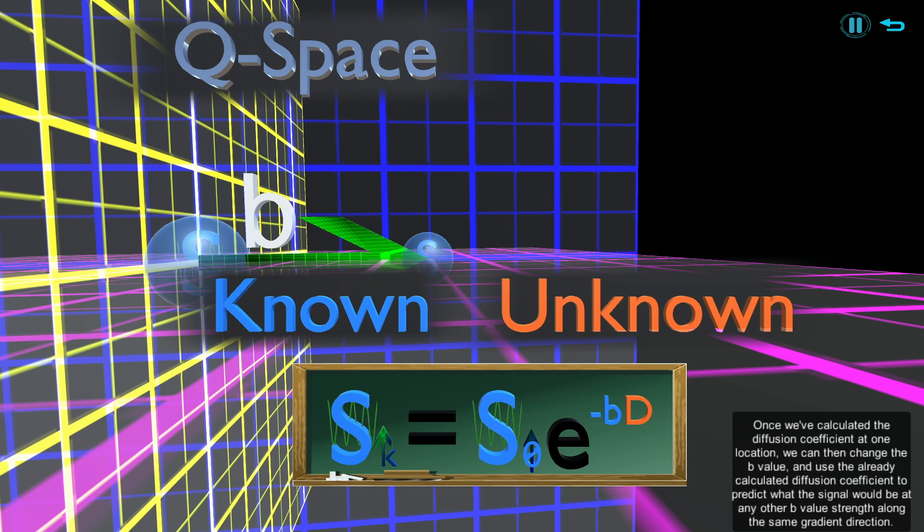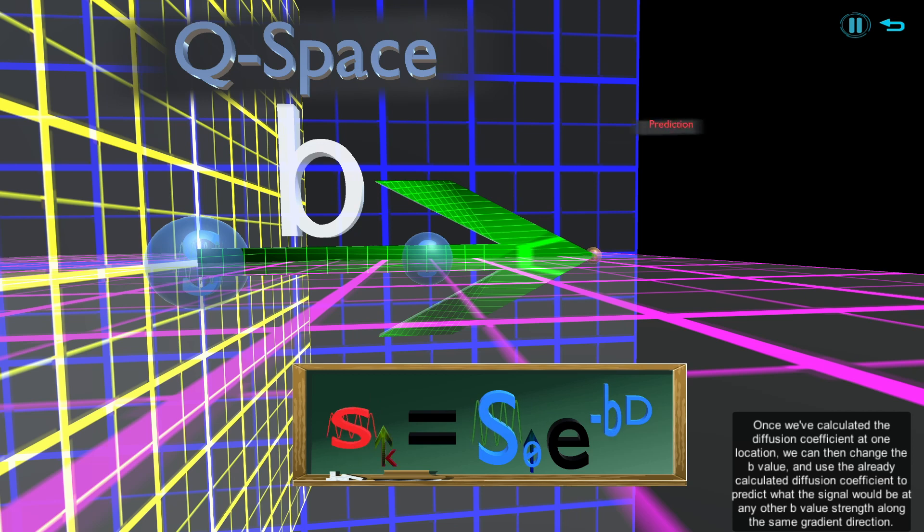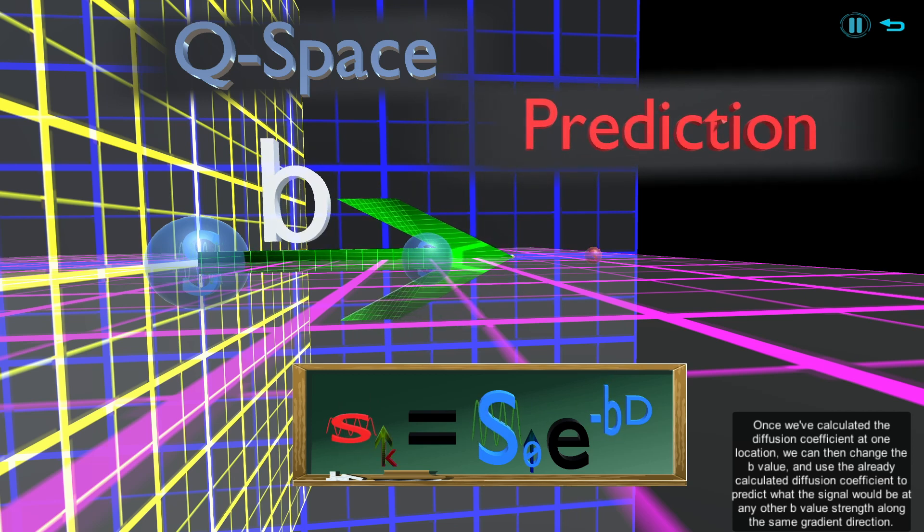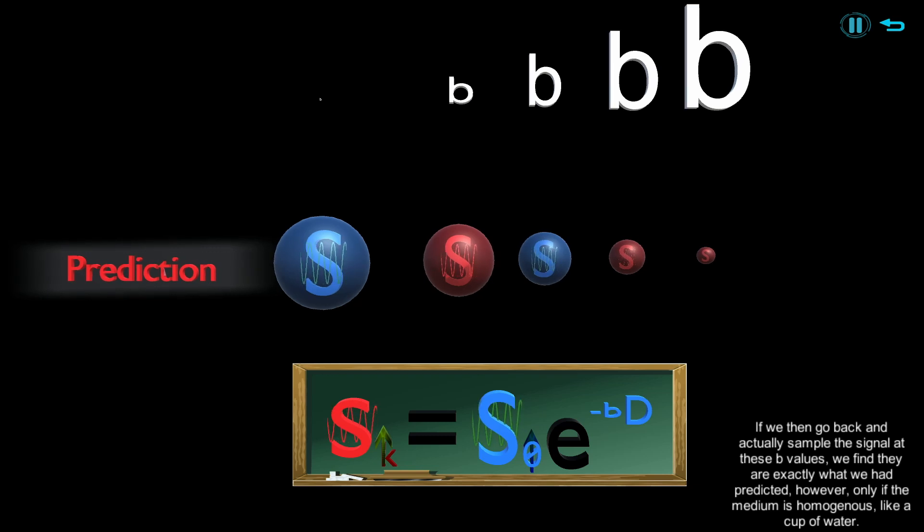Once we've calculated the diffusion coefficient at one location, we can then change the b-value and use the already calculated diffusion coefficient to predict what the signal would be at any other b-value strength along the same gradient direction. If we then go back and actually sample the signal at these b-values, we find they are exactly what we had predicted.